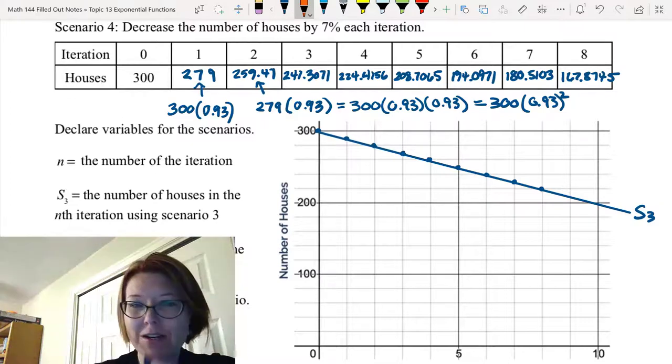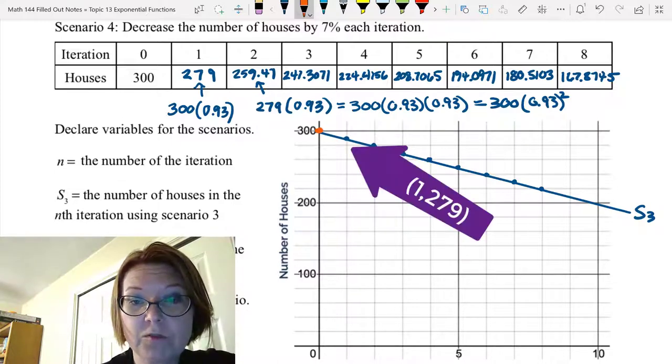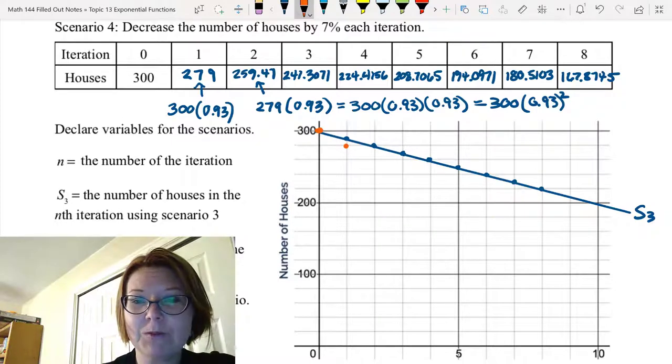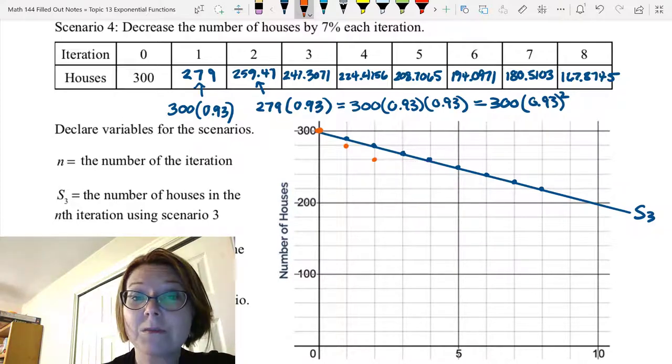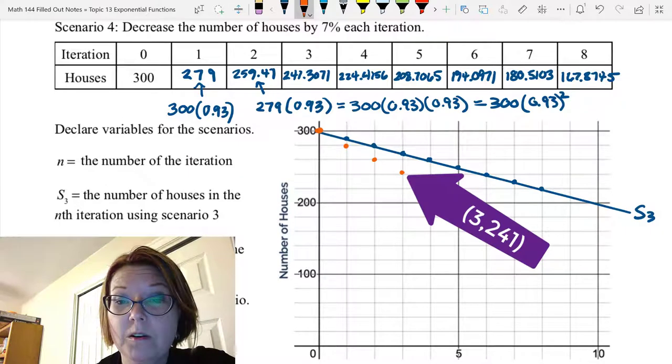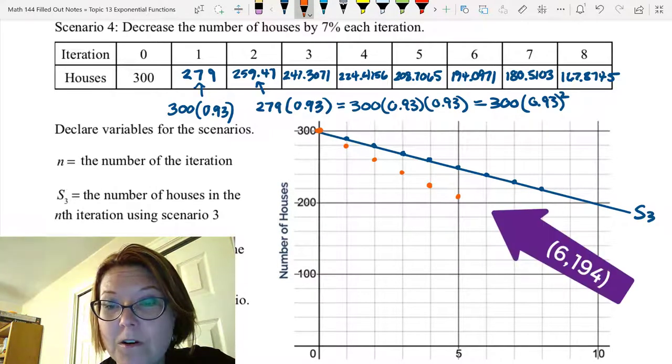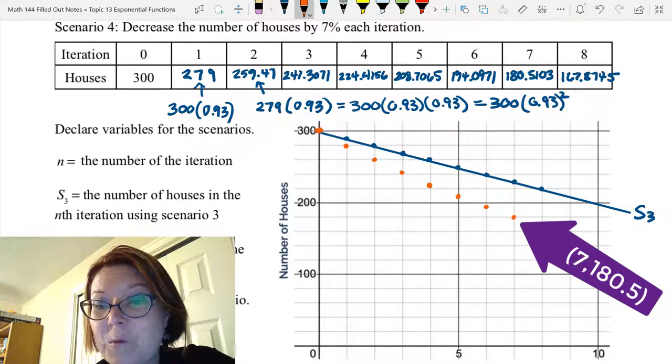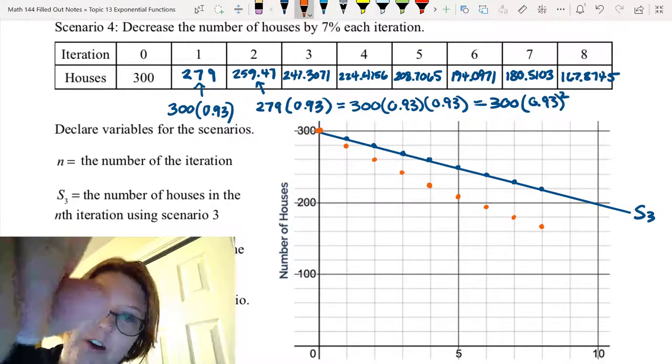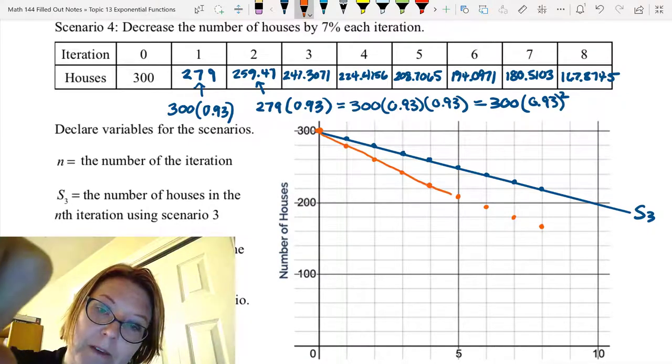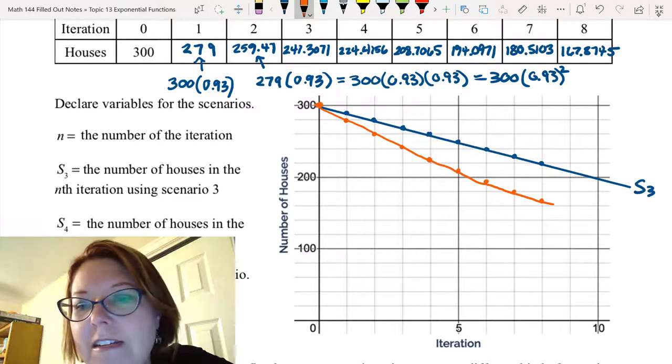If we go ahead and graph these points, let me graph them in an orangish color. We still have 0, 300. Then we have 1 and 279, which is right below 280. You see there's already a big divergence between the two scenarios. Then we have 2 and about 260, and 3, 241, 4, 224, 5, 209, 6, 194, 7, 180, and 8, 167. Now that might look a little bit like a straight line to you, but I can promise it is a curve. And I'll show you over in Desmos in just a second. So this is curving. And let's look at how it's curving. So this curve here is scenario 4.